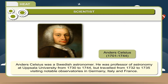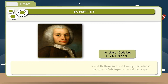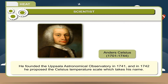Scientist Anders Celsius was a Swedish astronomer. He was professor of astronomy at Uppsala University from 1730 to 1744, but traveled from 1732 to 1735 visiting notable observatories in Germany, Italy, and France. He founded the Uppsala Astronomical Observatory in 1741, and in 1742 he proposed the Celsius temperature scale which takes his name.